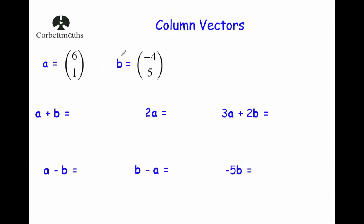Let's look at some questions without drawn diagrams. Vector a = (6, 1) and vector b = (-4, 5). To find a + b: 6 + (-4) is the same as 6 − 4 = 2, and 1 + 5 = 6. So a + b = (2, 6). That means going six right and one up, then four left and five up, gives two right and six up overall.